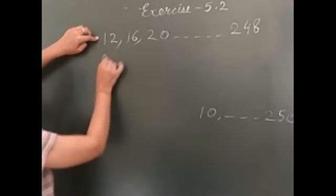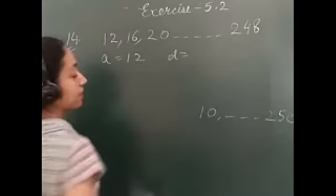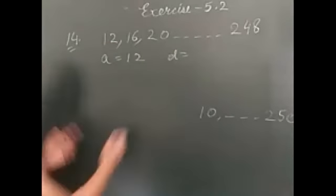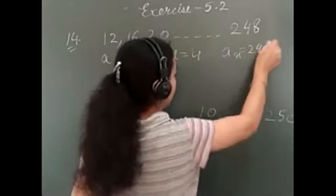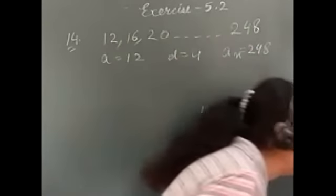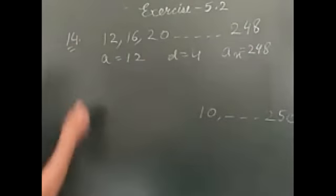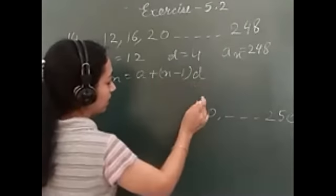So, here, I have the value of a, twelve, d. Whichever multiples you are taking, that itself is d. So, d is four. And, this 248 will be taken as a_n. Apply the formula: sixtieth term, or multiple of four. Okay, Jay, very good. A_n is equal to a plus n minus one multiplied by d.